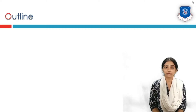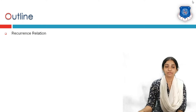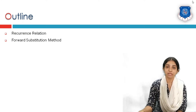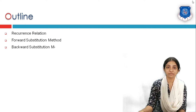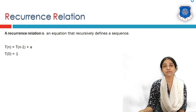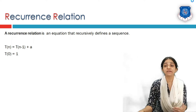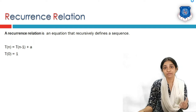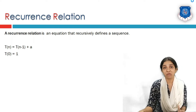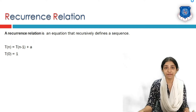Today we are going to study recurrence relation using substitution method. We will see what is recurrence relation and how to solve them using forward substitution method and backward substitution method. Recurrence relation is an equation which defines a sequence recursively. It takes the form of T(n) = T(n-1) + a, where instead of n-1 any value could appear.